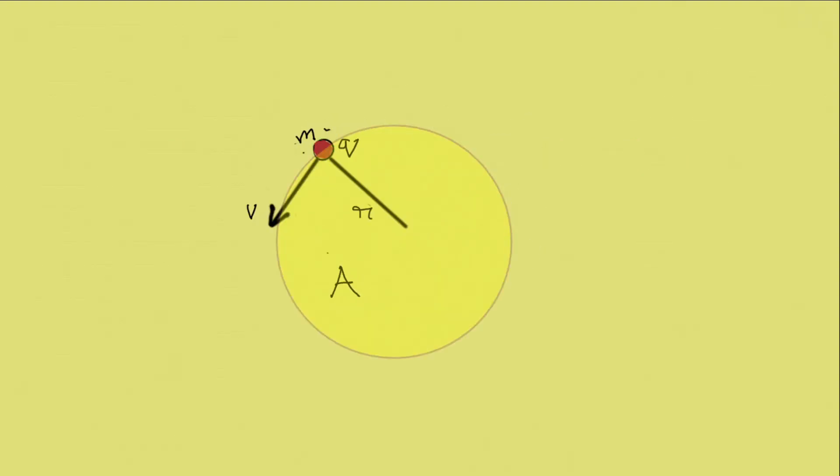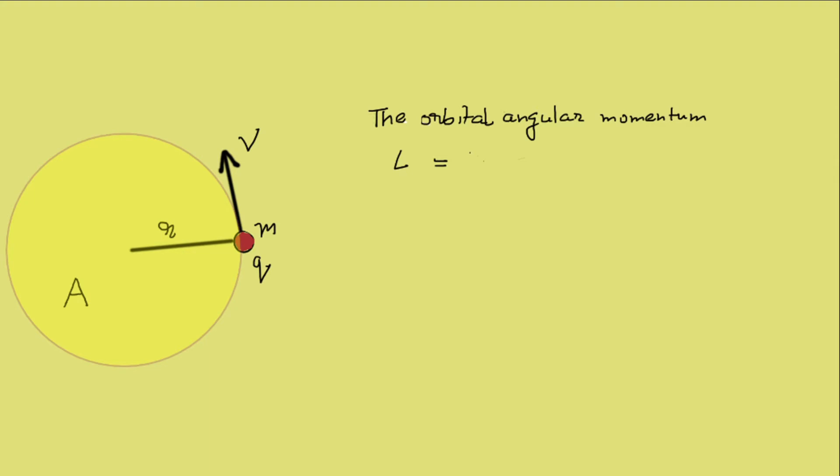Consider a point particle of charge q, mass m, in a circular orbit of radius r with speed v. The orbital angular momentum l is given by r into m into v. m into v is the momentum here. Hence l becomes r into p, where p stands for the momentum.